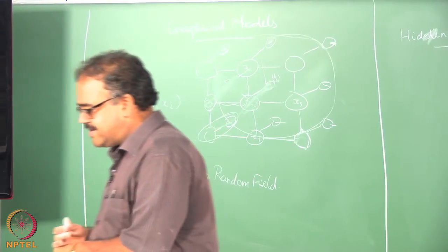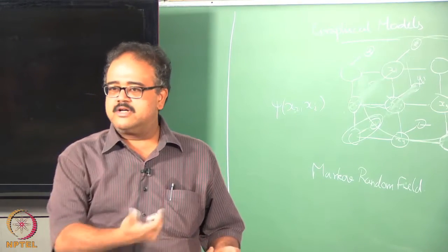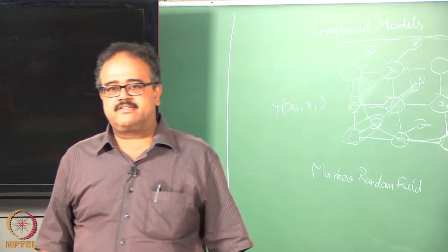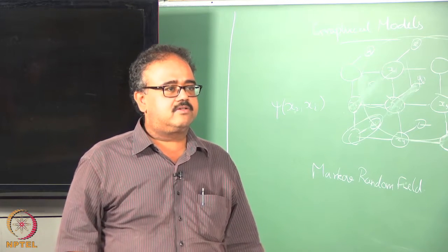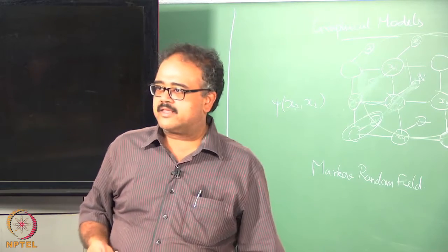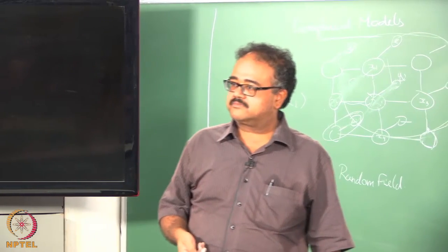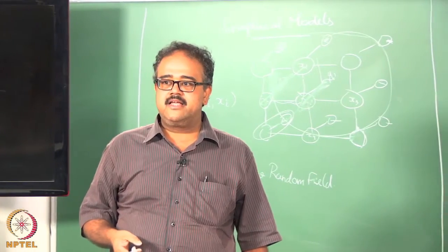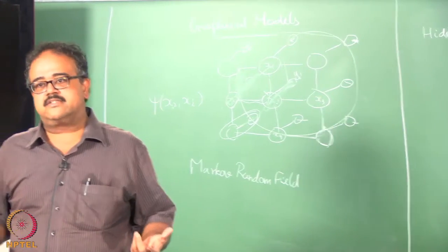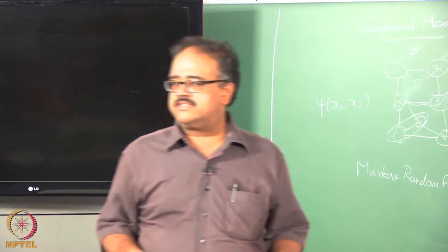Chunking essentially takes a piece of text and breaks it up into meaningful chunks — it could be noun phrases, verb phrases, whatever. There is also a related task called shallow parsing. Shallow parsing breaks text up into phrases but does not look at the internal structure of the phrases — it just gives the phrasal structure of the sentence.